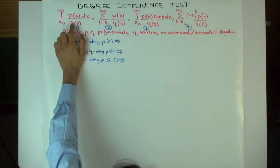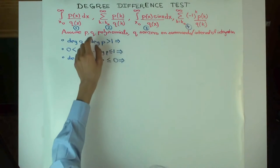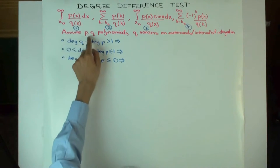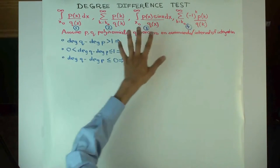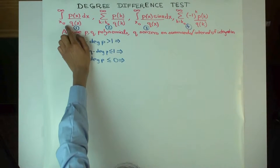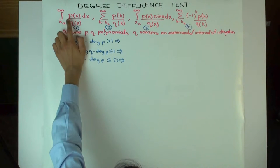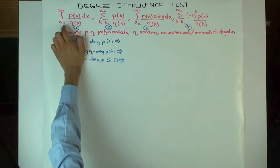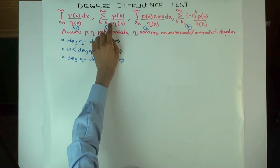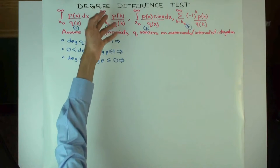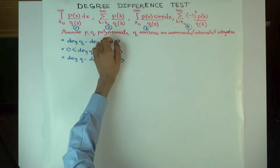I've written four types of things here. The first is an integral of P(x)/Q(x), where P and Q are both polynomials and Q is non-zero. We are integrating this rational function from x-naught to infinity, assuming the denominator is non-zero for x greater than or equal to x-naught. The second is a summation — very similar to the integration except you're summing over integers starting from k-naught up to infinity.